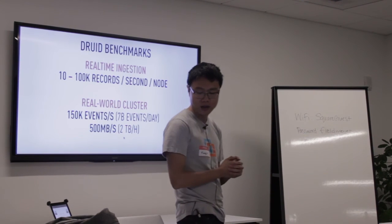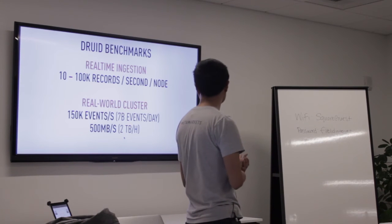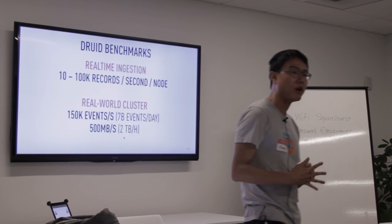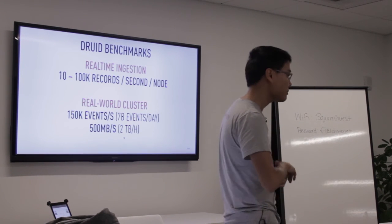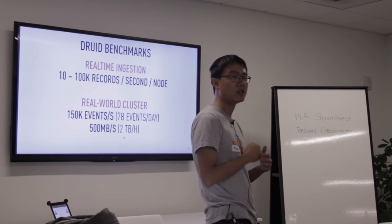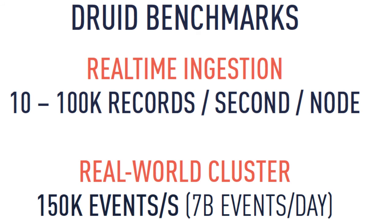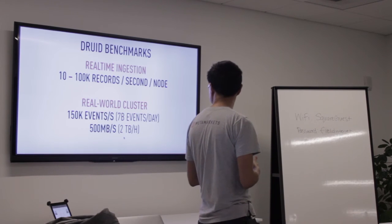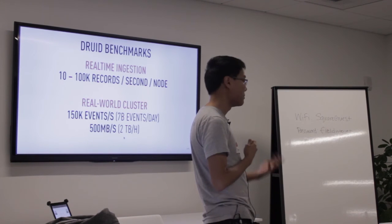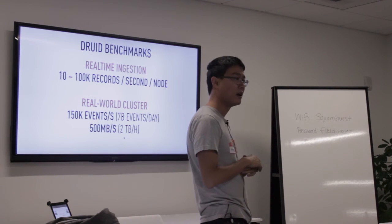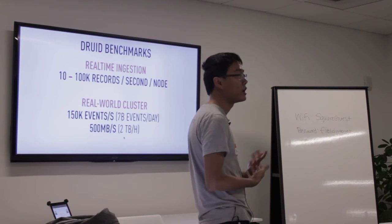Some benchmarks: we've benchmarked real-time ingestion on real-world data at anywhere between about 10,000 to 100,000 records per second per node, with ingestion rates varying with data complexity. In one of our partner clusters deployed at Netflix, they ingest at a rate of about 150,000 events per second — about 7 billion events per day — which amounts to about 500 megabytes per second, or two terabytes of data per hour.